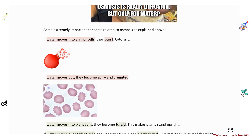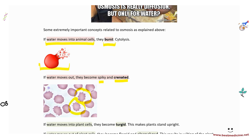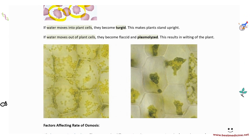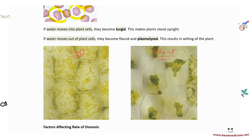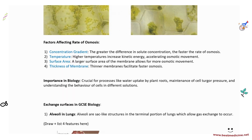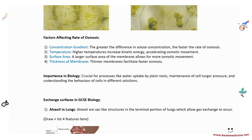To recap the key concepts: if water moves into animal cells, they burst — cytolysis. If water moves out, they become spiky and crenated. If water moves into plant cells they become turgid, and if water moves out they become plasmolyzed. Can you identify which image shows a turgid cell and which shows a plasmolyzed cell? Let me know in the comments.